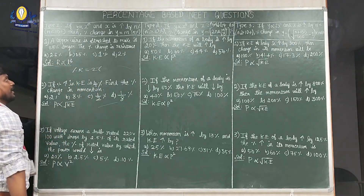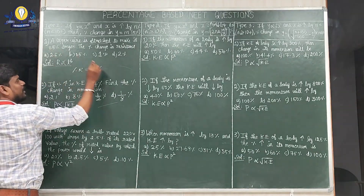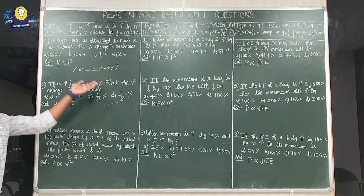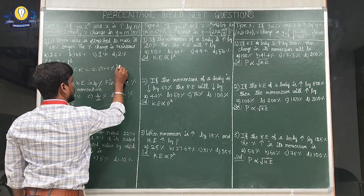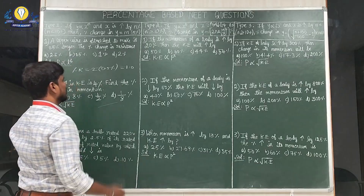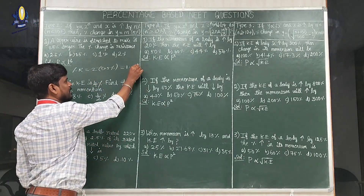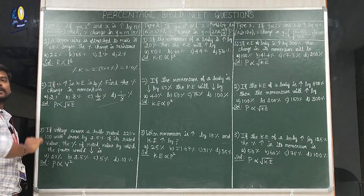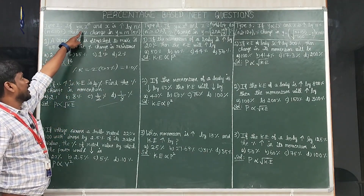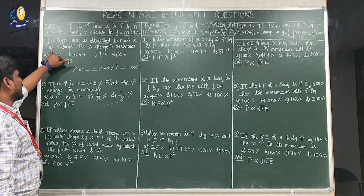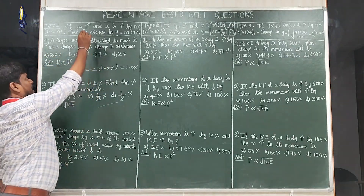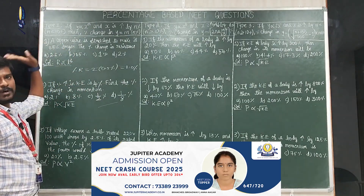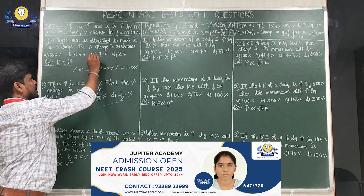So m = 2, and n = 0.5% as given in the question. Applying the formula: 0.5 × 2 = 1.0. So the answer is 1%. It is simple — because it is less than 10%, use the formula y ∝ x^m, and just multiply the percentage by the power: 0.5 × 2 = 1.